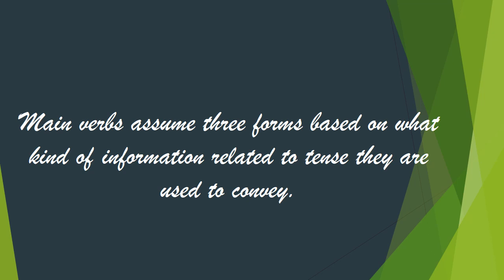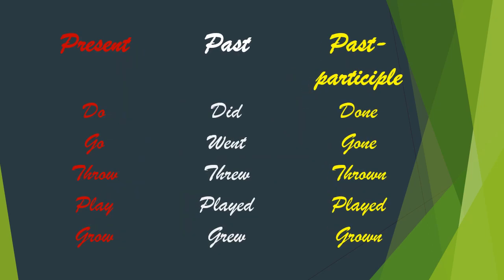The usage of an appropriate form of verb is of utmost importance in the structure of a sentence. Main verbs assume three forms based on what kind of information related to tense they are used to convey. Let's have a small table with three different forms of verbs: first form — do, did, done; second — go, went, gone; third — throw, threw, thrown; fourth — play, played, played; and fifth — grow, grew, grown.